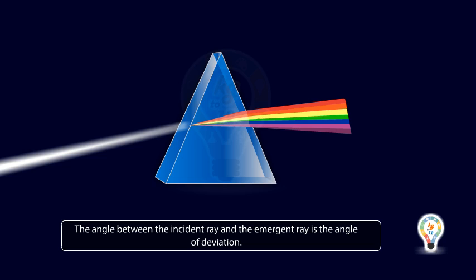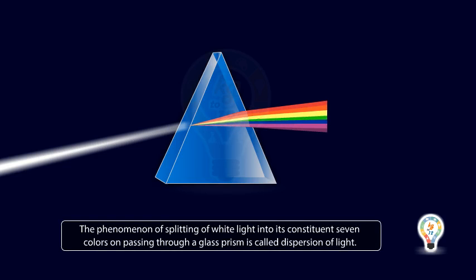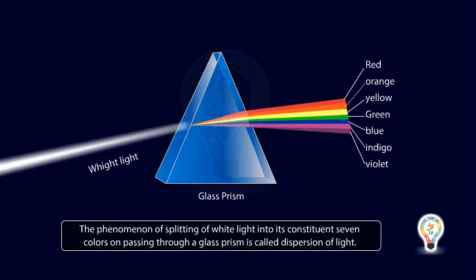The angle between the incident ray and the emergent ray is the angle of deviation. The phenomenon of splitting of white light into its constituent seven colors on passing through a glass prism is called dispersion of light.